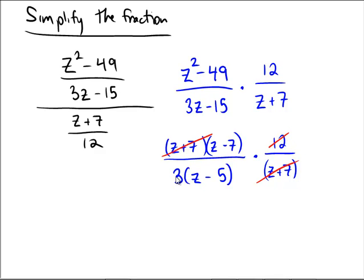From the 12 and the 3, we can reduce 12 by 3 to get a 4, and that looks like it. The z's don't cancel because technically these aren't z's. They're fixed with their 7s and their 5s inside of these binomial pieces.